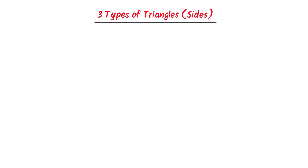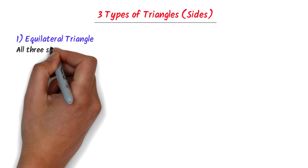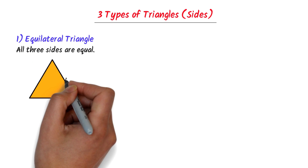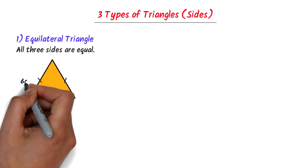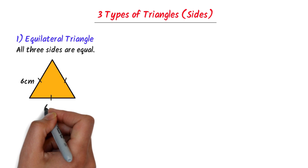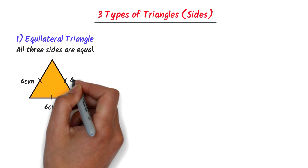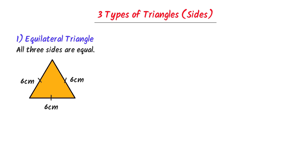We will learn the three types of triangles on the basis of sides. The first type is equilateral triangles. In equilateral triangles, all three sides are equal. That's why we put a single dash on all three sides. For example, in this triangle, this side is 6cm, this side is 6cm, and this side is also 6cm. All sides are equal, so we call it an equilateral triangle.